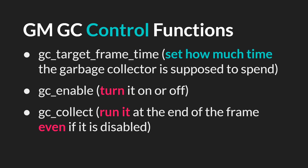GameMaker also has several functions that allow you to control how the garbage collector works. There is GC target frame time, which allows you to set how much time the garbage collector is supposed to spend per frame. Then you have GC enable, which allows you to turn it on or off, and GC collect, which will force the garbage collector to run at the end of the frame even if it is currently disabled.